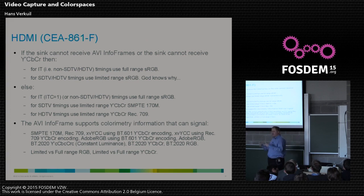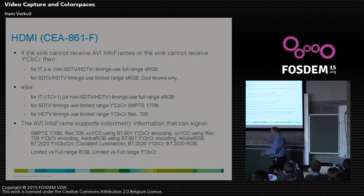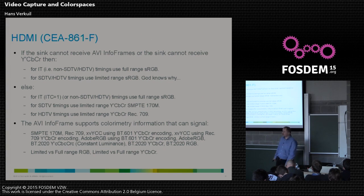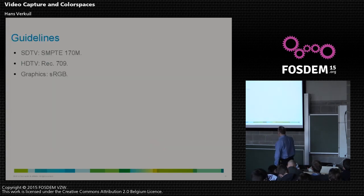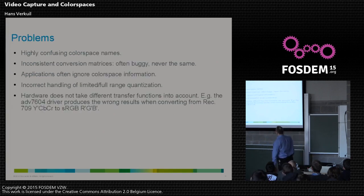If you do have infoframes: for computer graphics use full range, for standard definition use SMPTE 170M limited range, for high definition use Rec. 709. HDMI also supports a whole bunch of additional formats including the latest UHD format. Here is the one-minute guide: standard definition → 170M, high definition → 709, anything else → sRGB full range. That's a very good default.